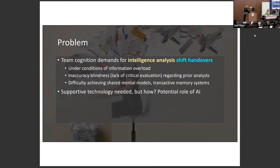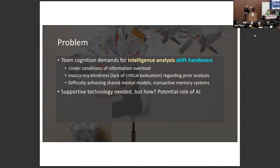In the intelligence analysis field, this occurs in 24/7 or crisis work, where an analyst works on a problem, gets pulled away, and another analyst needs to jump in without losing any prior work. The team cognition challenges we're looking at include: information overload, inaccuracy blindness — where analysts won't question assessments from prior analysts — and difficulty achieving shared mental models and transactive memory systems, which is how you know what other people know — a division of labor for knowledge management.